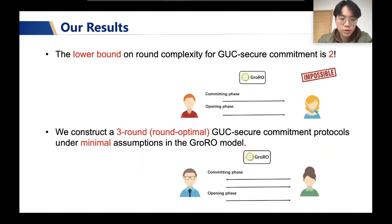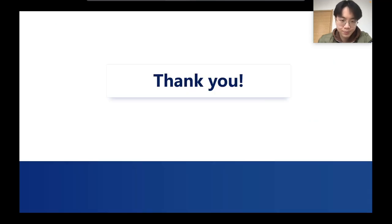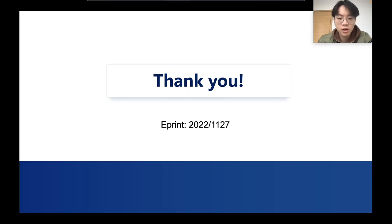To answer the first question, we prove that the lower bound on round complexity for GUC secure commitment in the GRO model is 2. To answer the second question, we give a 3-round construction under minimal assumptions in the GRO model, and we suggest that this construction is round optimal. More details can be found in the ePrint version of our paper.